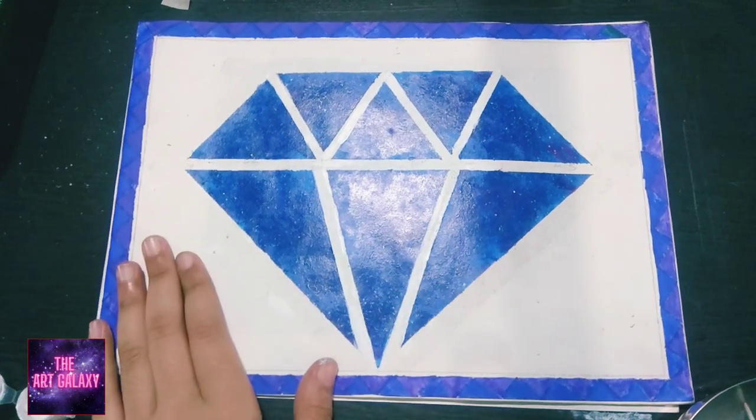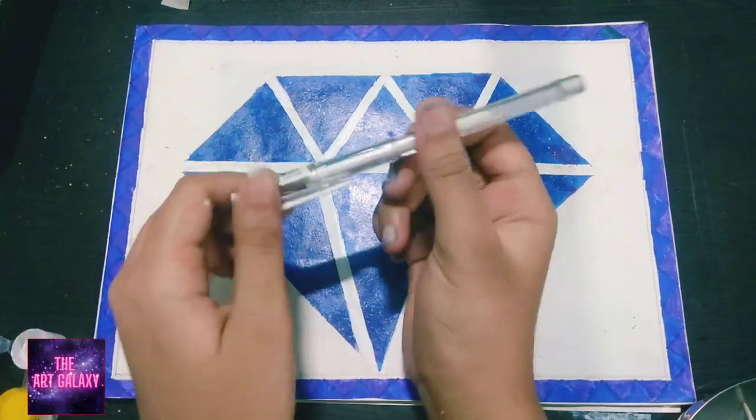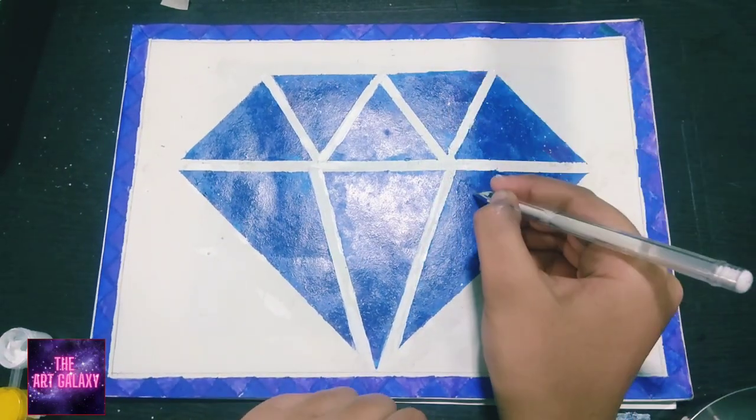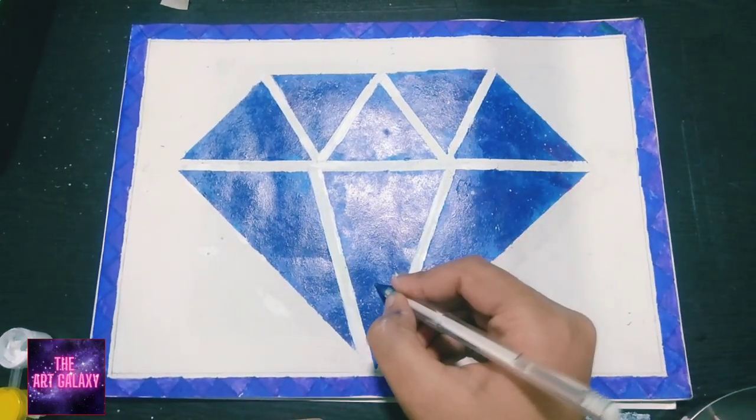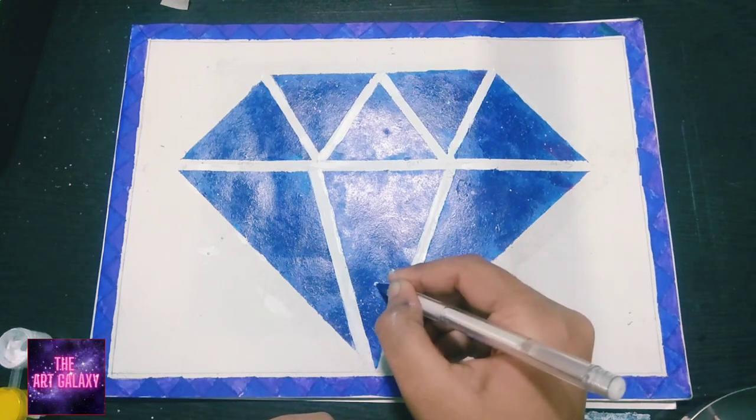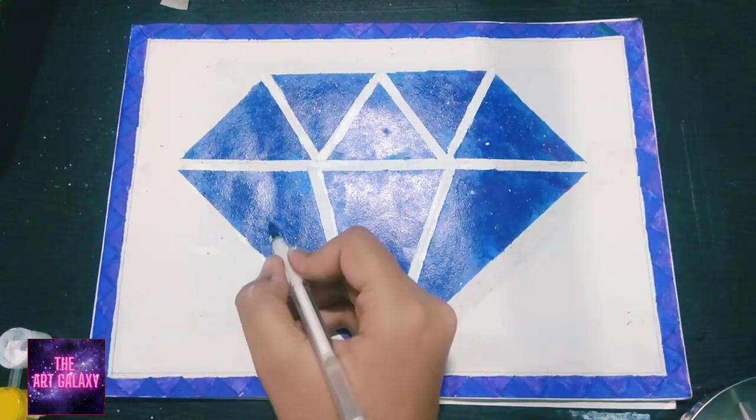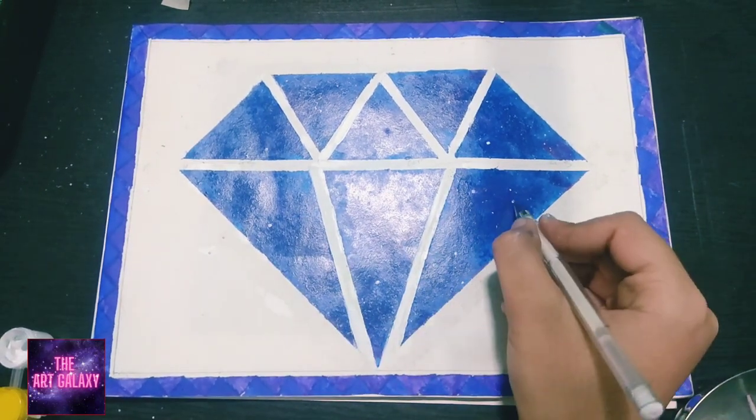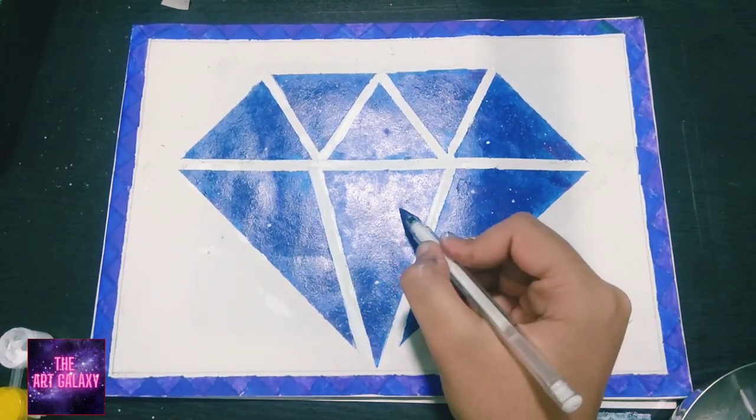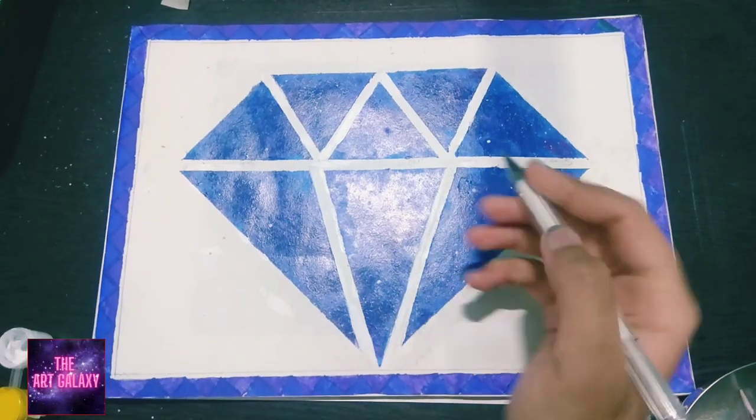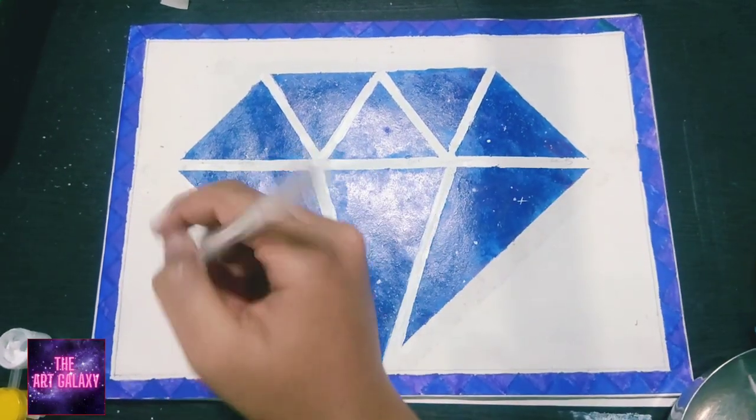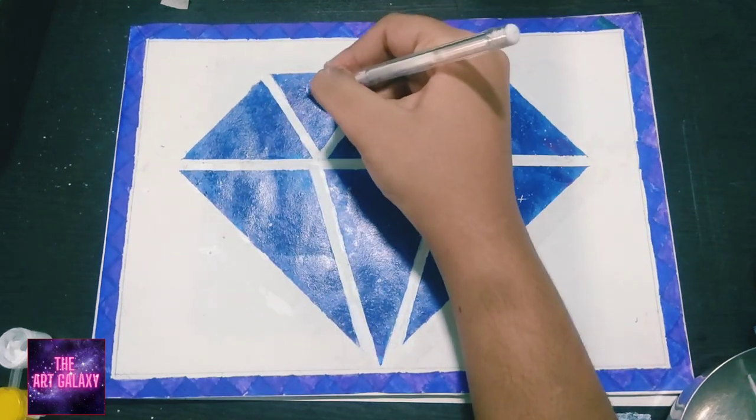Now we have to use a white gel pen to draw some stars and some highlights in our diamond. If you don't have a white pen, you can use some paint too. Please don't forget to like this video, subscribe to my channel, and press the notification bell so you will be notified for my newly posted videos.